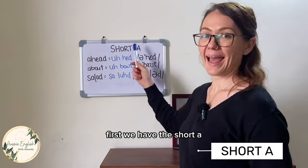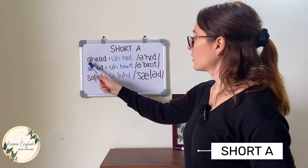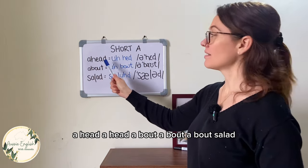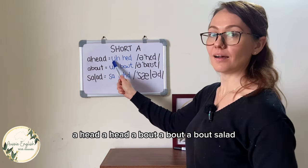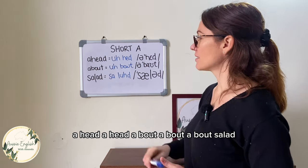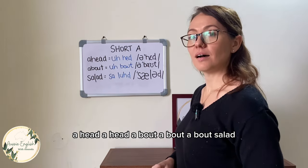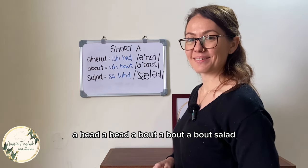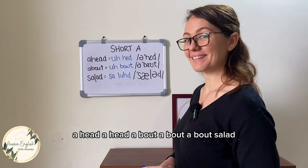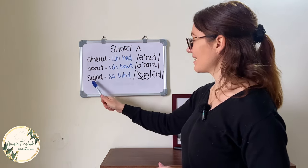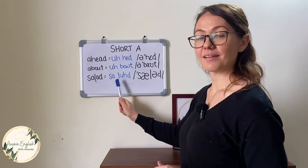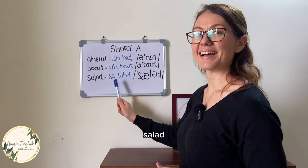First we have the short A. The first word is 'ahead' — uh-head. The second is 'about' — uh-bout. And the third is 'salad' — sal-uhd. You can hear the schwa replacing the short A sound in each of these words.